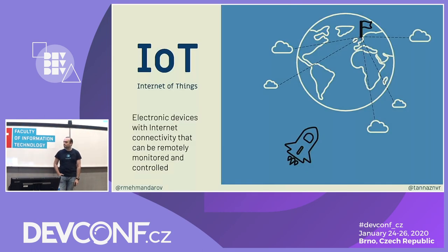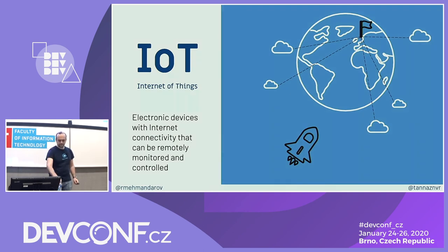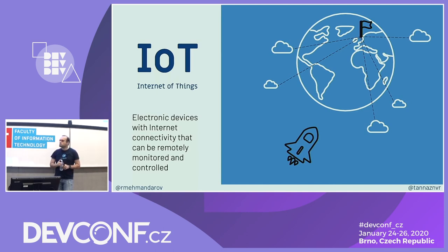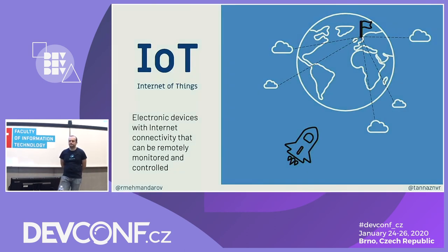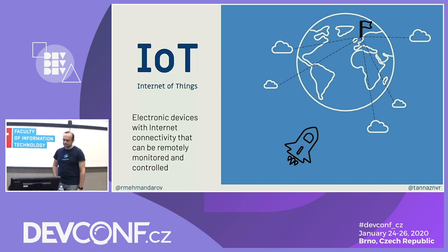IoT, or the Internet of Things, is the connection between our physical world and the digital world. These devices have internet connectivity — they generate and collect massive amounts of data and send it over the network to servers or cloud for processing, then receive the results. But there are challenges too, because as internet connectivity grows and mobile technology improves, our lives become more and more dependent on such devices, bringing privacy concerns and security issues.